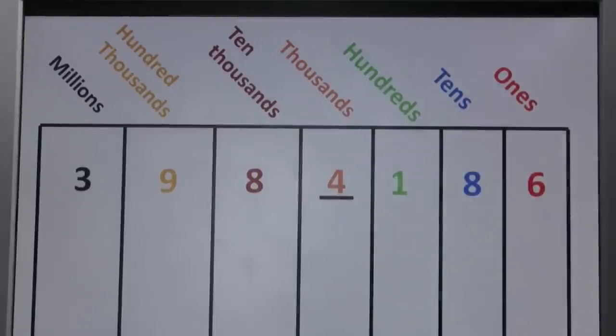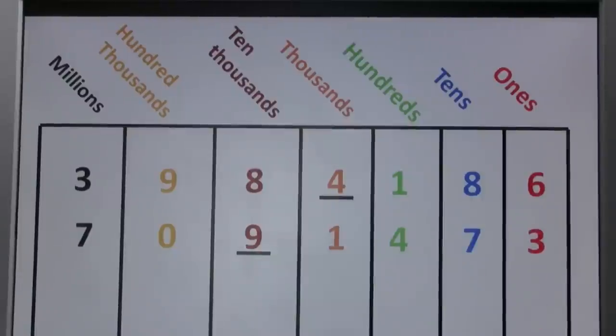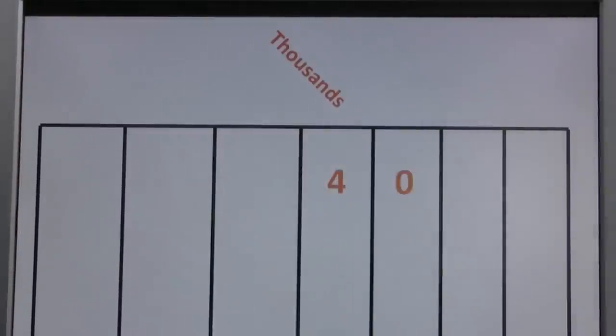The thousands. The value is four thousand. Same thing with the nine. The place value is ten thousand, the value is ninety thousand. See?